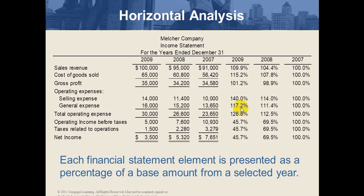The increase in selling and administrative expenses gives a bad indicator about management's ability to control costs, and will have a negative effect on net income. Consequently, total operating expenses — selling plus general and administrative — increased from 112.5% in 2008 to 126.8% in 2009, meaning operating expenses have been increasing across years, which may affect the profitability of the business.